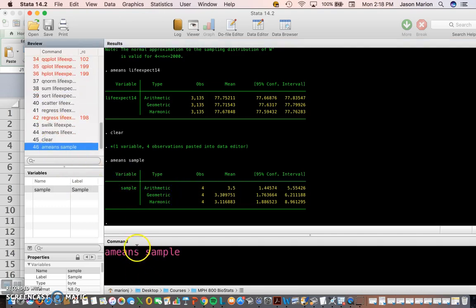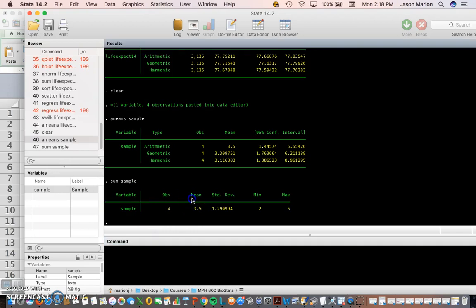And then that gives me the same numbers that we got from Excel - arithmetic and geometric mean. I can also type in SUM sample, and that gives me the mean as well, and a standard deviation. And we'll go into more detail on the other measures of central tendency here in the next video. Alright, so thank you.